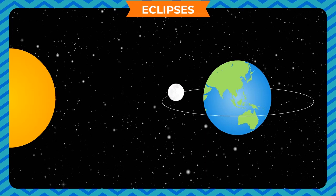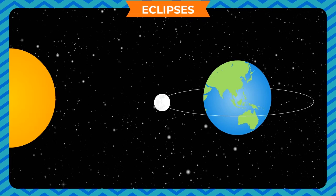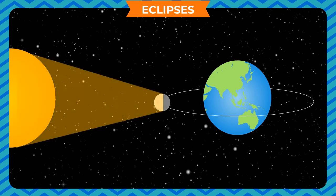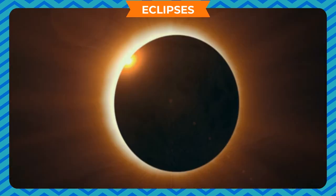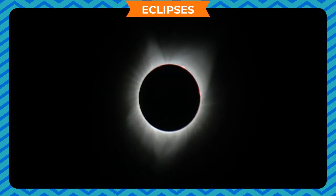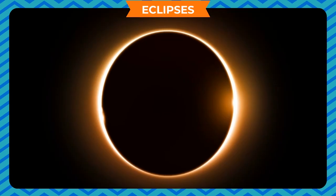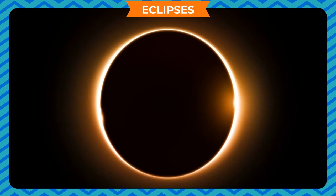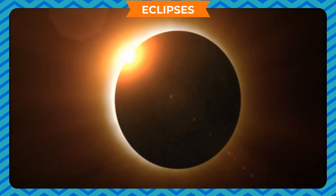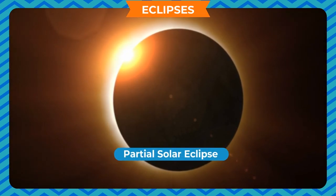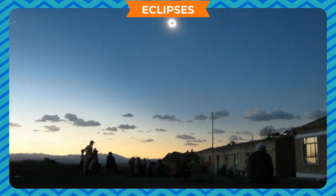An eclipse takes place when a planet or moon passes between another planet, moon, or the sun. This term is mostly used to define solar eclipse and lunar eclipse. A solar eclipse occurs when the moon revolves around the earth and lines up directly between the sun and the earth, completely or partially blocking the sunlight and casting its shadow on the earth. When the moon completely blocks the sunlight it is called a total solar eclipse; when it is partially blocked it is called a partial solar eclipse. Solar eclipses happen during the daytime.